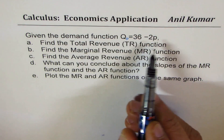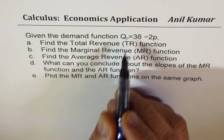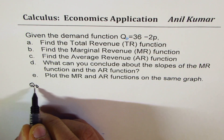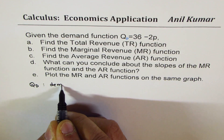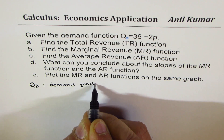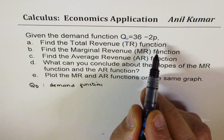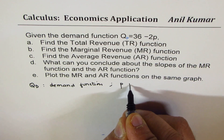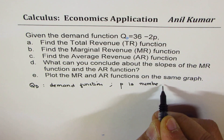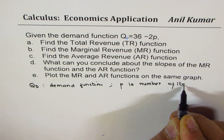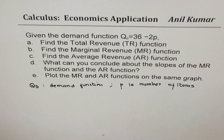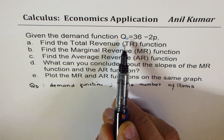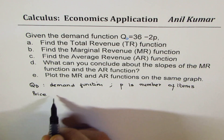Some viewers may not understand what all these things are, so let me elaborate. When we say q, I'll write q with 'd' — this is the quantity in demand, so this is what we call the demand function. This demand function is expressed with respect to p, where p represents the number of items. This demand function also means the price function.